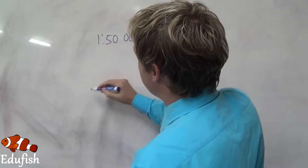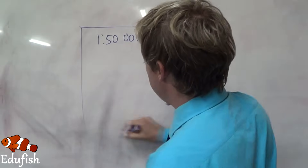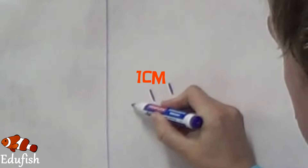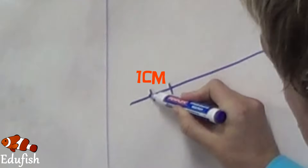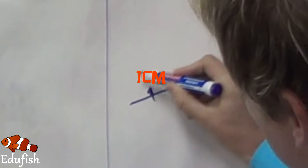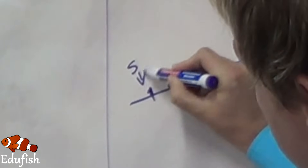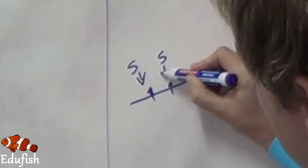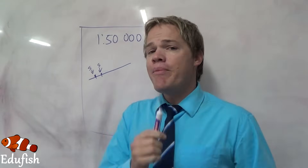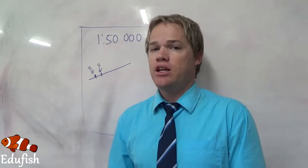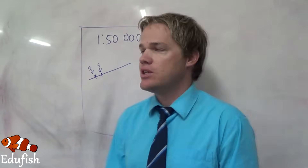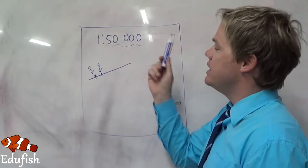Let's say for example you've got a map and on this map you take your ruler and you measure 1 cm. Let's say this is a street, and there is a shop on one side and another shop on the other side. You measured 1 cm between the two shops. On your map it is only 1 cm, but if you go to that place in real life you will find that it is 50,000 cm.